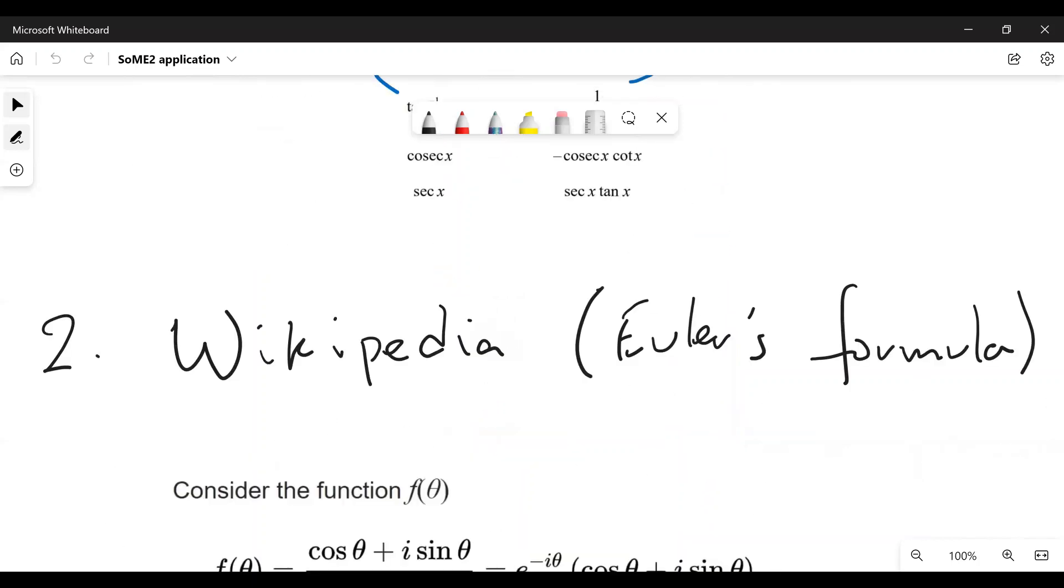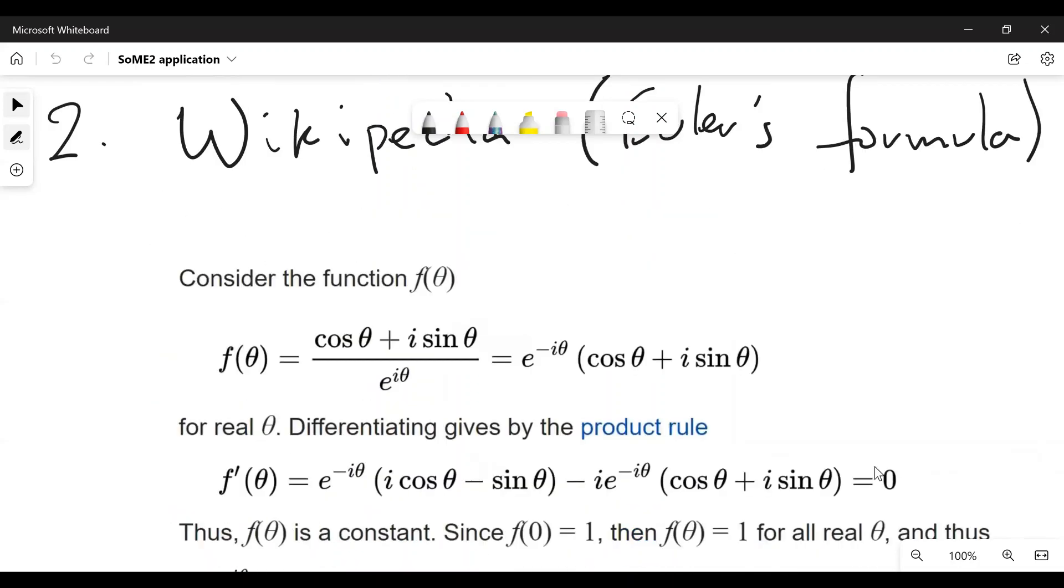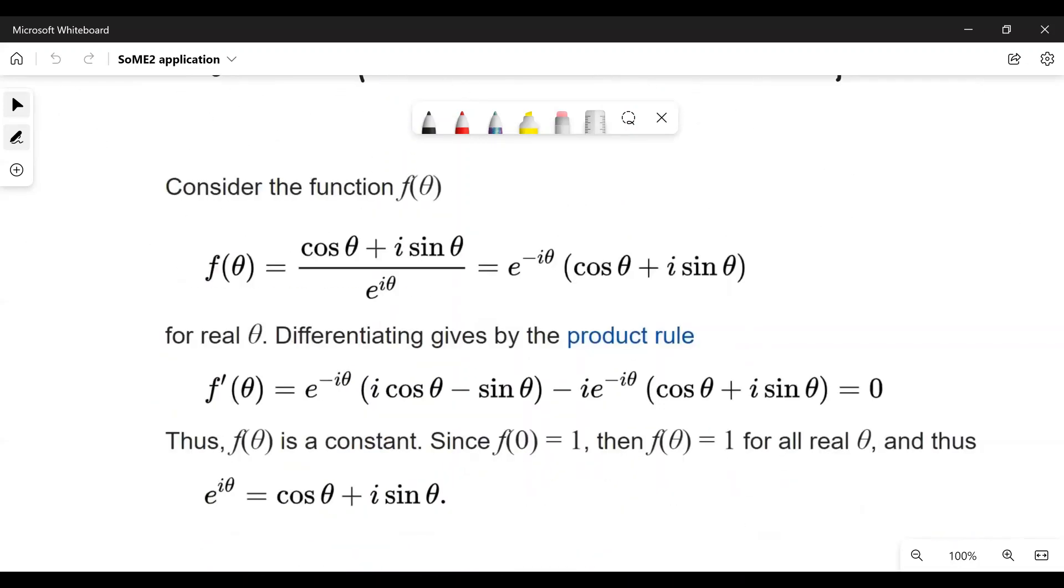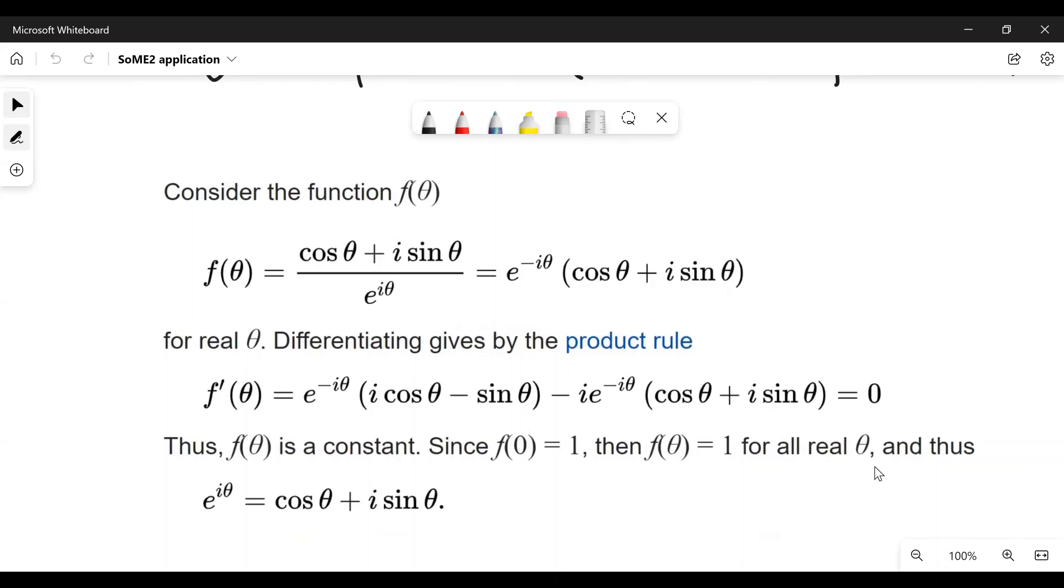And the other one is this Wikipedia article on Euler's formula, the famous one. Yes, you don't have to do some Taylor series expansion to prove this. Just use this differentiation. Very easy. And then it is proven like that. So it is easy.